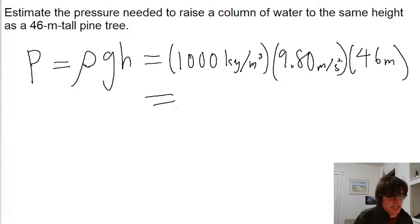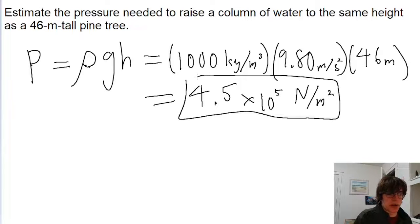So we put in 1000 times 9.8 times 46, and out of our calculators, we get a pressure difference of 4.5 times 10 to the power of 5 newtons per meter squared. And so that is our answer to this problem.